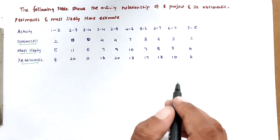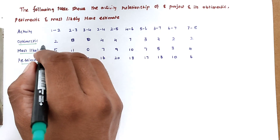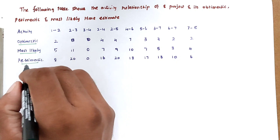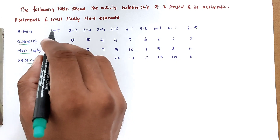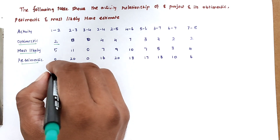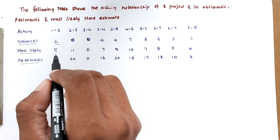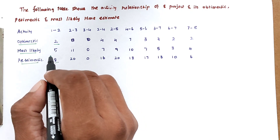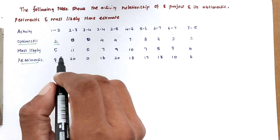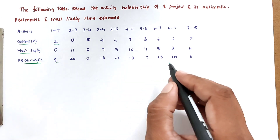The optimistic time means every activity is going very well as per plan. The most likely time is the average time. The pessimistic time accounts for unavoidable situations — for example, if we plan an activity for two days but some unforeseen circumstances cause it to take eight days. When plans collapse, the activity takes a larger time to complete — that is the pessimistic time.